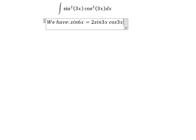I will show you the technique how to answer the question. We have sin 6x = 2 sin 3x cos 3x. So I will use this formula to do this one.